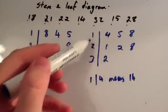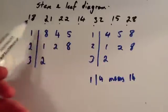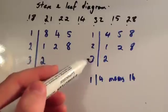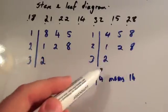Okay? So you've got your stem, which is the tens, you know, 18 to, you know, so you've got the 1, 20s, 30s, and then you get each one of the leaves, so it represents a number.